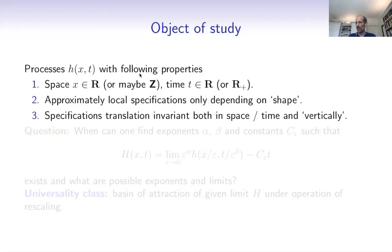We want the following properties. We want some kind of local specifications — the rules of how H gets updated at some space-time point should only depend on what it looks like in some reasonably local region around that point.